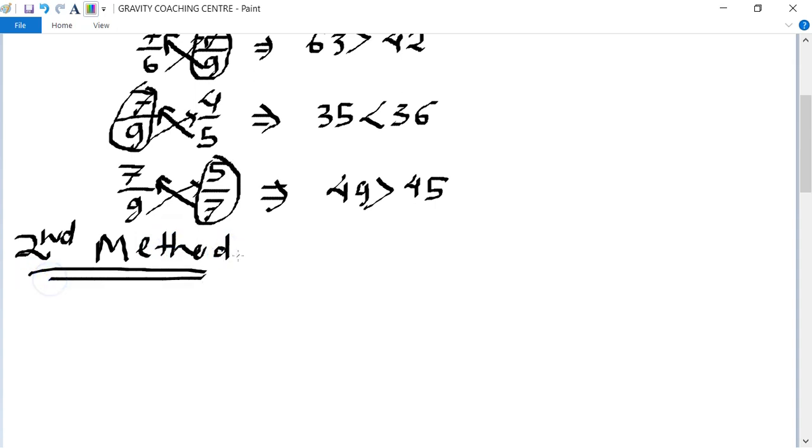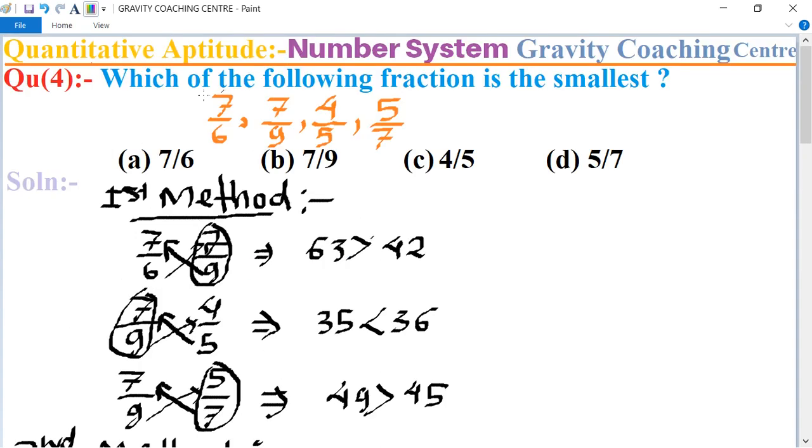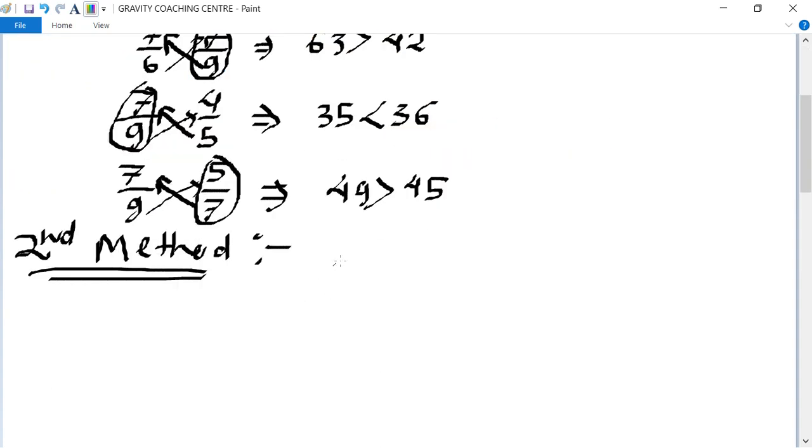The second method: first we take the LCM of 6, 9, 5, 7. So first we take the table of 3: 3 goes into 6, 3 goes into 9, and 5 comma 7.